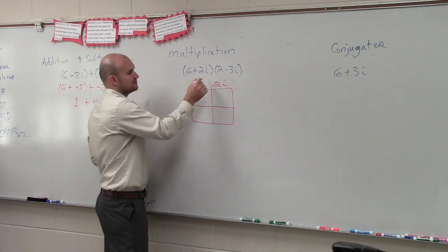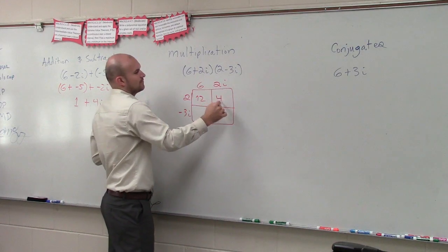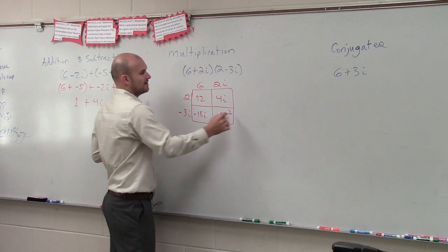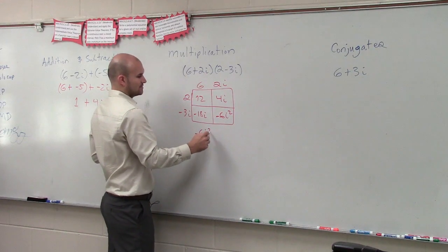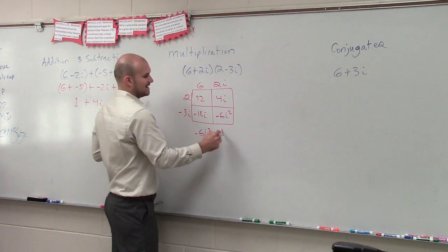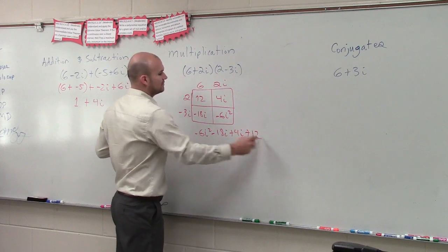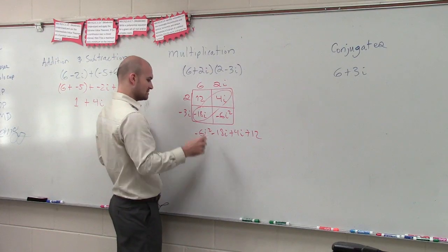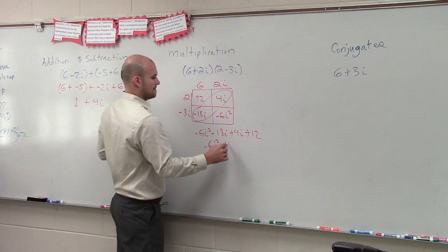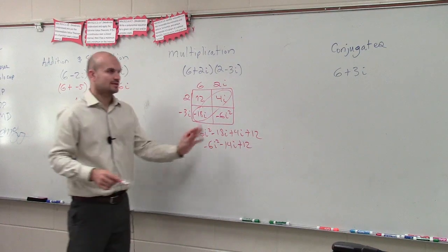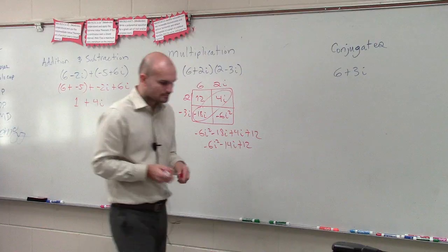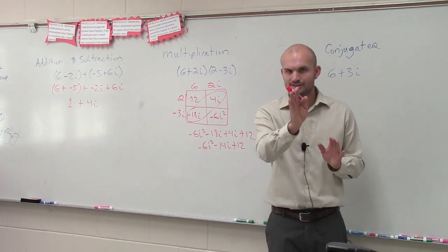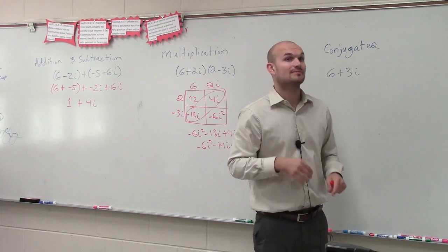To multiply, 2 times 6 is 12, 2 times 2 is 4i, 6 times negative 3i is negative 18i, negative 3i times 2i is negative 6i squared. So we have negative 6i squared minus 18i plus 4i plus 12. Combined like terms, you get negative 14i. So for right now we're just going to leave it like this. So that's going to get into, hold on, not yet. Once I say division, then we'll go.